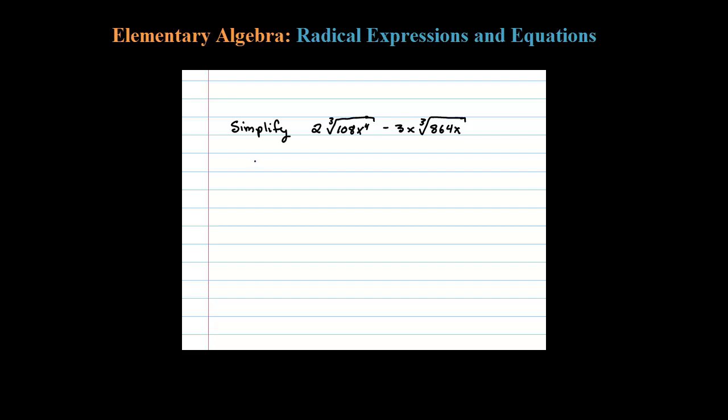Here we're asked to simplify this. Now don't let the large numbers intimidate you. It's very much easier to simplify with the prime factorization here of 108. Okay, so I went off to the side and 108 is 2 squared times 3 to the third times x to the fourth. Once you have the prime factors, it really is easy to work with.